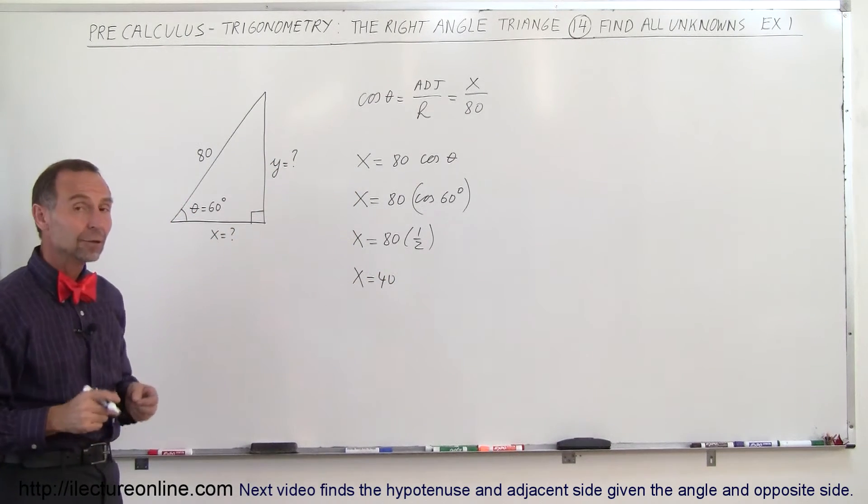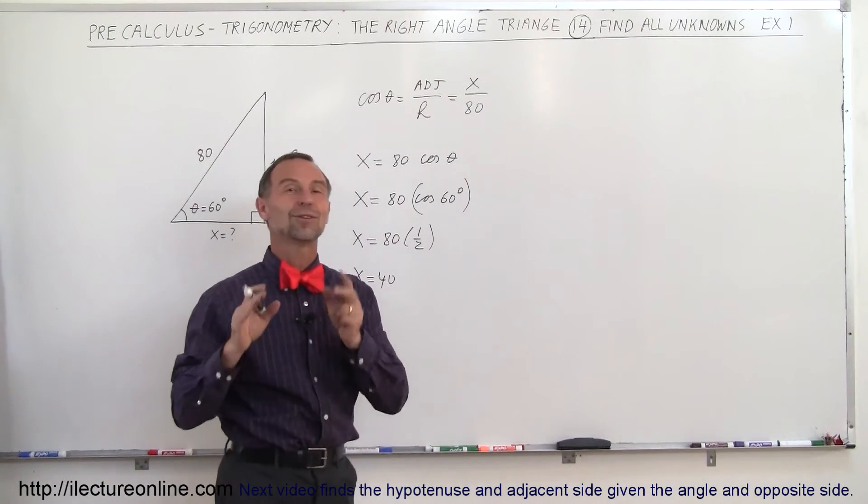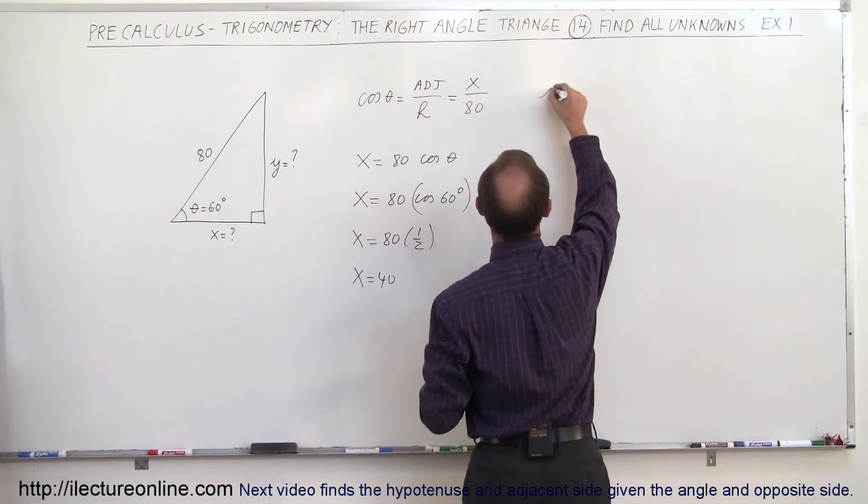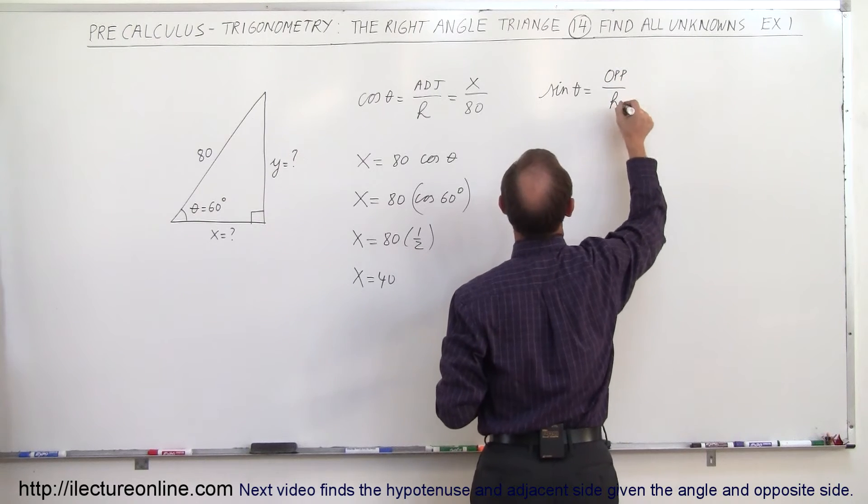What about the other side, the opposite side? Well, for the opposite side we want to use the sine of theta. By definition, the sine of theta is equal to the opposite side divided by the hypotenuse.